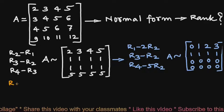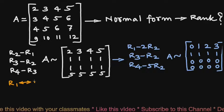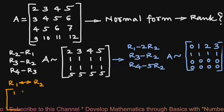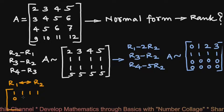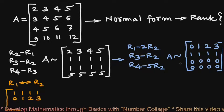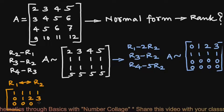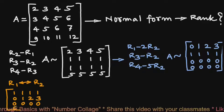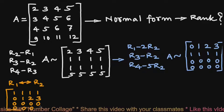By interchanging row 1 with row 2, we get the equivalent matrix: first row [1,1,1,1], second row [0,1,2,3], third row [0,0,0,0], and fourth row [0,0,0,0].